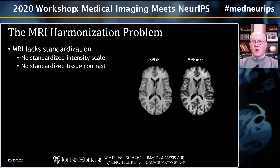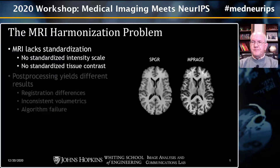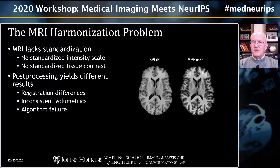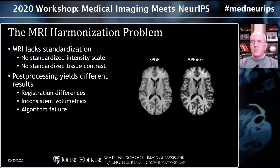The problem is that MRI lacks standardization. Here are two images that are both T1-weighted, and you can see, although they have strong similarity, they are different subtly in the tissue contrast. What happens with this is that it creates problems in post-processing. If you design an algorithm for the MPRAGE, it won't work all that well for the SPGR image. As a result, registration errors can occur in inconsistent volumetrics and even algorithm failure.